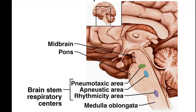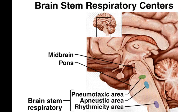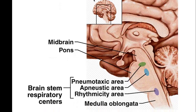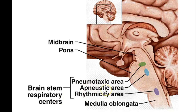Since we're going to move into acid-base next time, I want to finish up this lecture talking about the brainstem respiratory centers. Here's what's going to be controlling respiration — in your brain this is going to be a cross-section through the middle. Here's the hypothalamus, the midbrain, and here's the pons. Right next to the pons in the brainstem, you have three respiratory centers: a pneumotaxic area, an apneustic area, and a rhythmicity area — and that's all above the medulla oblongata.